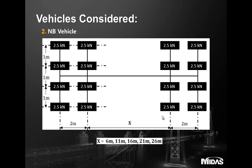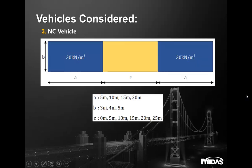The third vehicle is the NC vehicle. In accordance with the standard, the A, B, and C values are provided, where the blue part is the loaded area with an intensity of 30 kN/m². The A, B, and C dimensions are in accordance with the provisions of the standard.